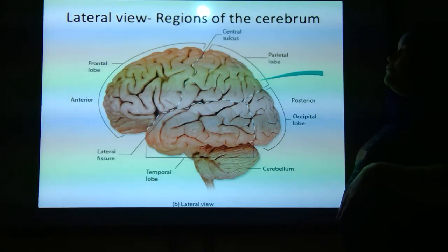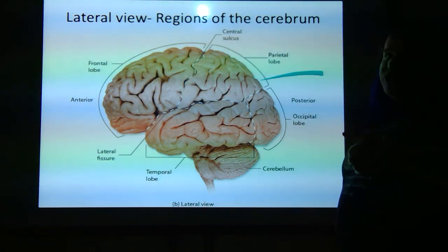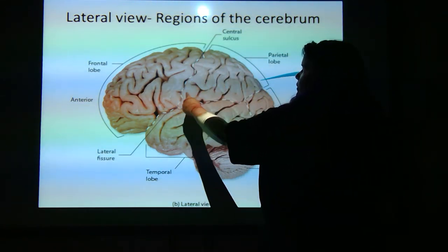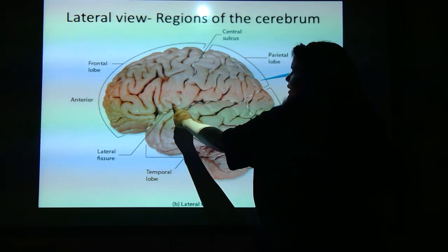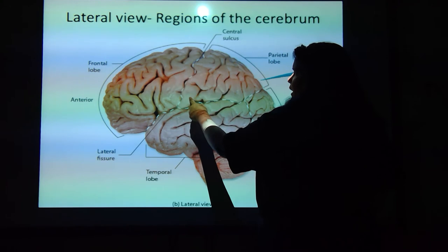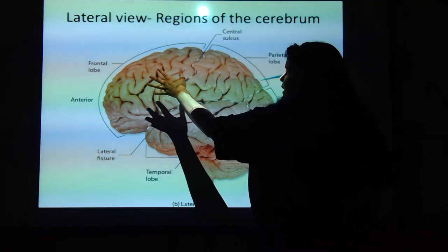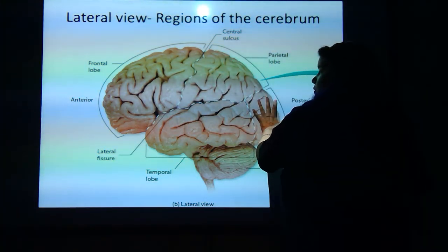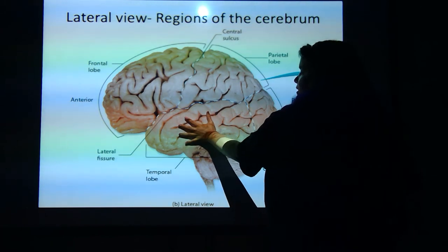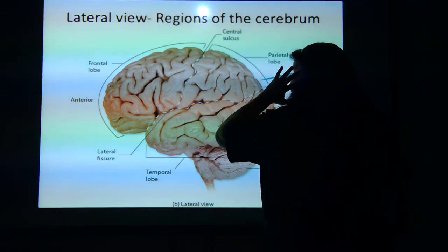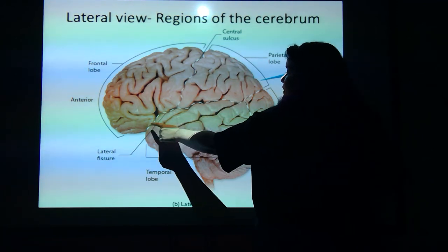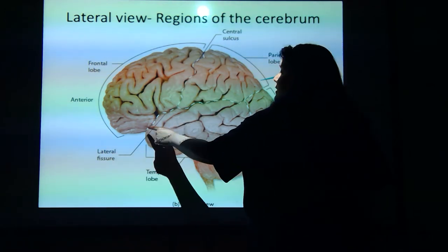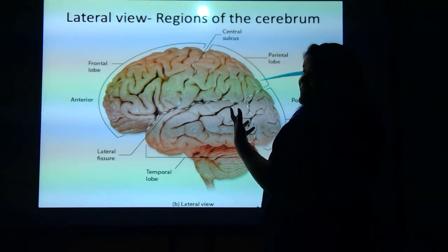Looking at it from the side, now it's intact. Here is that central sulcus — the fold before it is the precentral gyrus, the fold right after is the postcentral gyrus. Frontal lobe, parietal lobe, occipital lobe. The one we couldn't see before was the temporal lobe, which is right here — temporal bone, temporal lobe. This fissure along the side is called the lateral fissure — lateral meaning side. And then you've got your cerebellum down here.